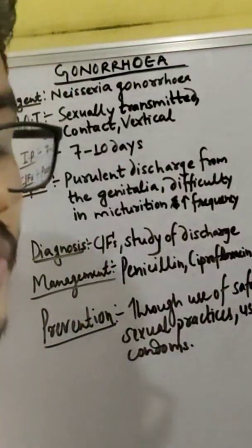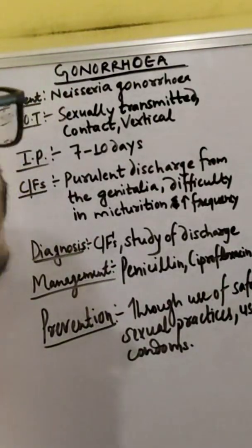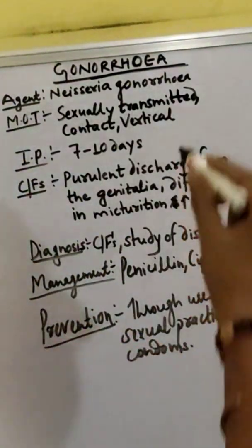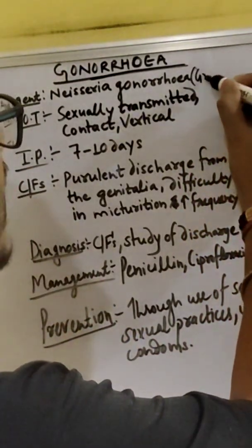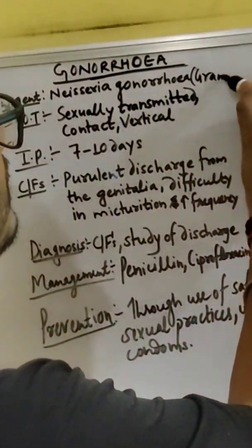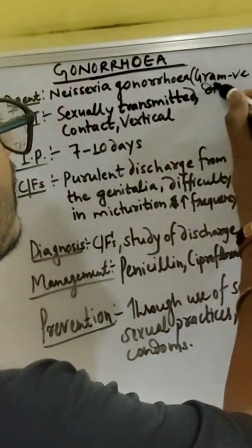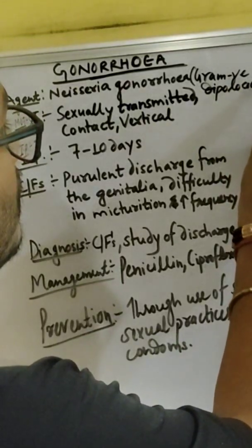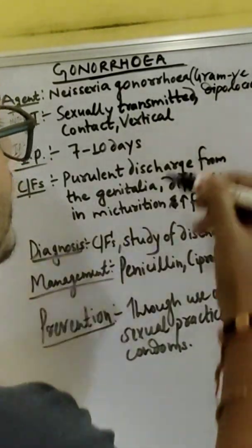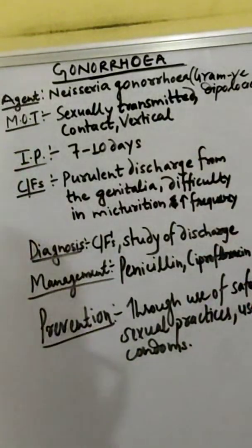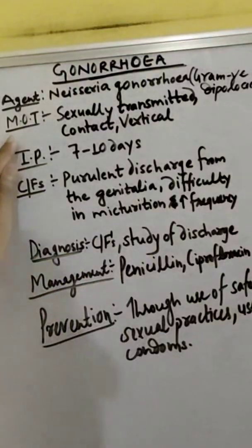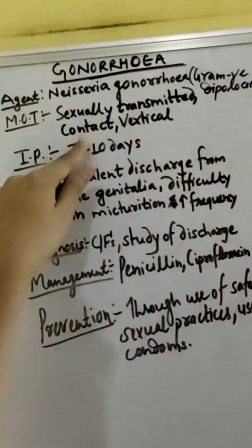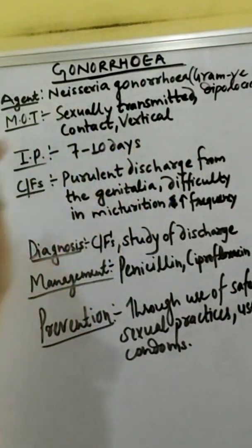The causative agent of gonorrhea is Neisseria gonorrhoeae. It is a Gram Negative Diplococcus. Transmission modes include sexually transmitted, contact, and vertical transmission.